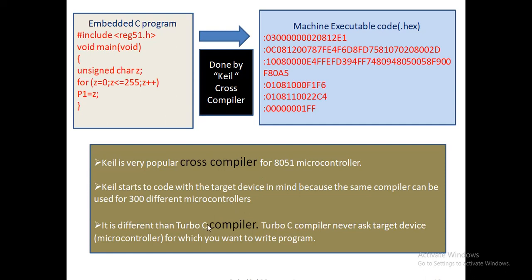What is the difference between a compiler and a cross compiler? A compiler compiles the program and executes it on the host system only — whichever system you are writing the program on, it executes on that same system. A cross compiler allows you to write code on the host machine and execute that same code on a different device. Turbo-C compiler never asks for a target device because it is a regular compiler — the machine executable code it generates will not run on any other machine or device.